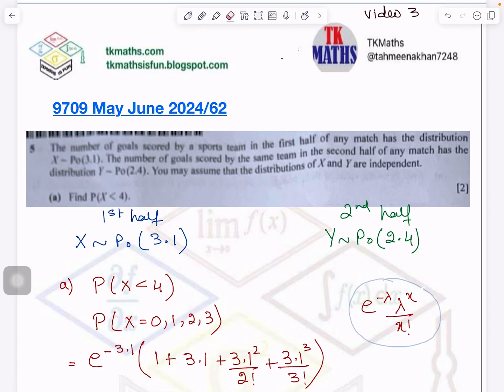Good morning, Tehmeena Khan is here in TK Maths S1. In today's video we will solve two questions from the paper June 2024 variant 6.2. It is S2 paper of A-level mathematics. Code is 9709.